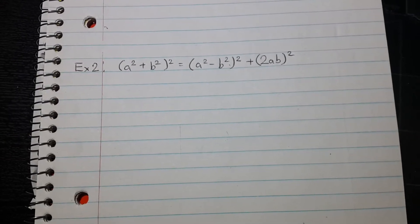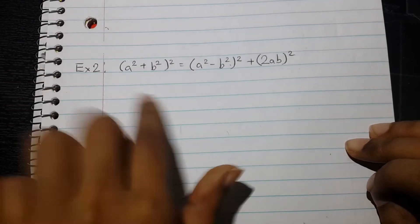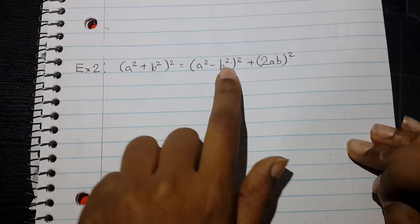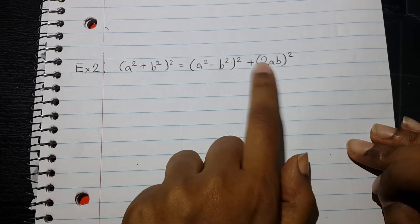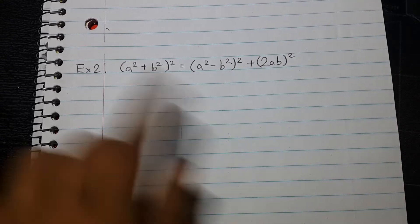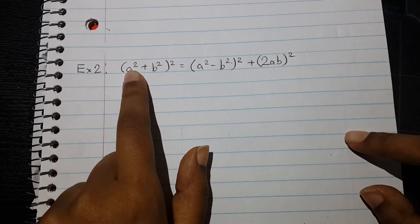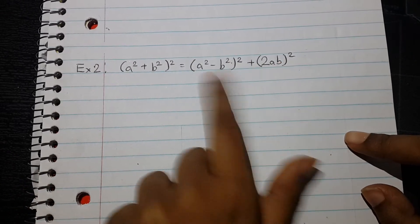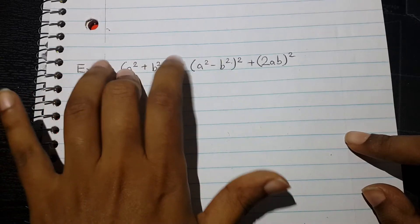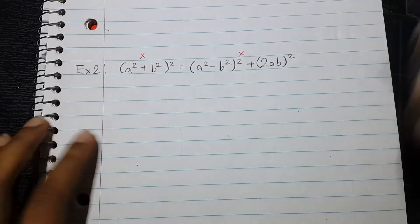Let's take a look at the next one. Here I have: (a² + b²)² equals (a² − b²)² + (2ab)². This is not simplified because we have parentheses on both sides, so in this case we're going to be simplifying both the left-hand side and the right-hand side — both of them need to be worked on.